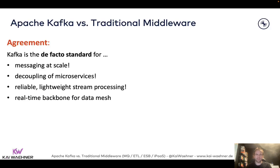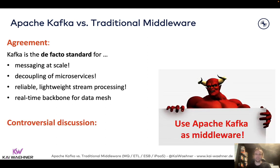Most people agree that Apache Kafka is used everywhere — it's the de facto standard for messaging at scale, true decoupling of microservices, a lot of continuous data processing in real time, and also as a backbone for a data mesh. Still, while this recording is from 2022, we are still discussing whether you should use Apache Kafka as middleware, and so many enterprises do because of the benefits compared to traditional middleware.